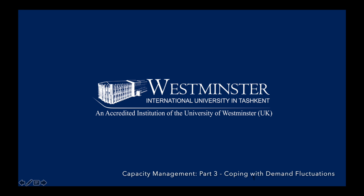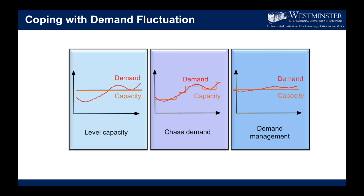Part 3: Coping with demand fluctuations. There are three strategies or approaches that help us deal with demand fluctuations. If you are in a seasonal business and we sell ice cream, what should we do with our capacity in summer when demand is high? Do we hire additional staff? Do we rent or buy additional equipment? What are we going to do in winter when demand for ice cream consumption drops? These three strategies help to guide us through these dilemmas. Let's look into them one by one.